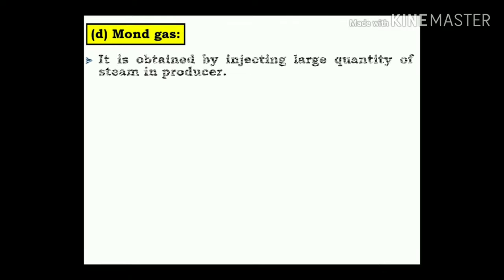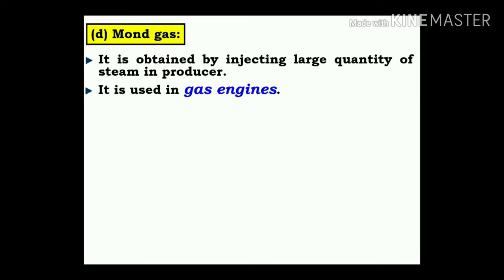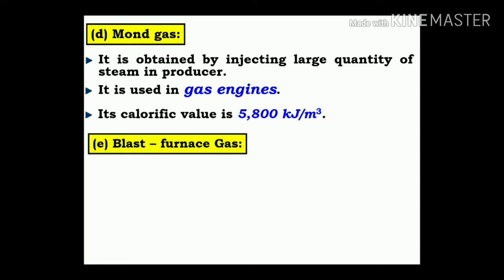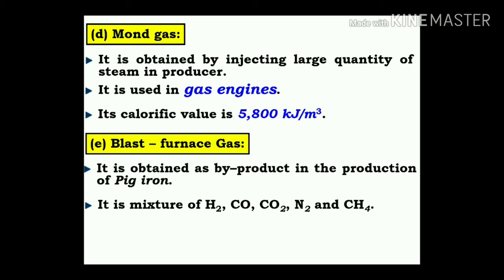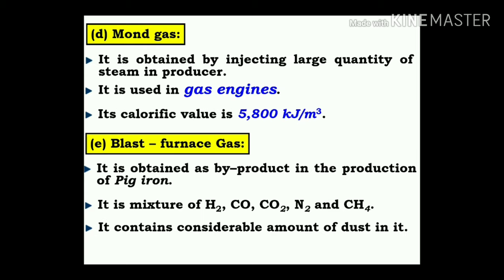Mond gas: it is obtained by injecting large quantities of steam into a producer. It is used in gas engines and contains a calorific value of around 5,600 kJ/m³. Blast furnace gas: it is obtained as a by-product in the production of pig iron, as a mixture of hydrogen, carbon monoxide, carbon dioxide, nitrogen, and methane. It contains a considerable amount of dust. Its calorific value is low at 3,800 kJ/m³.